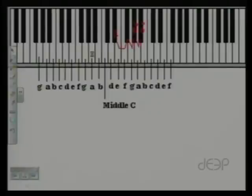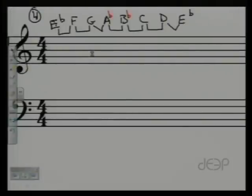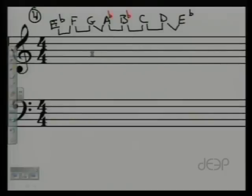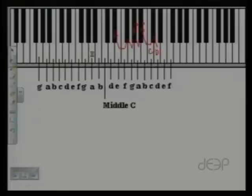B flat to C whole step. B flat, one, two to C. There's your whole step. C to D whole step. One, two, yep, whole step. And then D to E, half step. And in fact, or excuse me, D to E flat, half step. And there's your E flat. In fact, that works out.